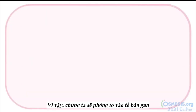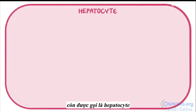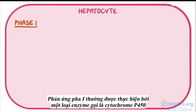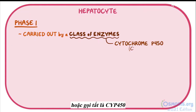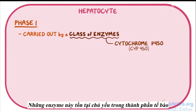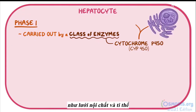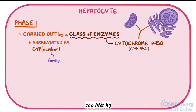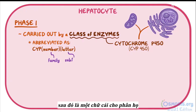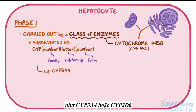Let's zoom into a liver cell, also known as a hepatocyte. Phase 1 reactions are typically carried out by a class of enzymes called cytochrome P450, or CYP450 for short. These enzymes hang out mainly in cell compartments like the endoplasmic reticulum and the mitochondria. They're often abbreviated as CYP followed by a number indicating the family, a letter for the subfamily, and then a number for the form — like CYP3A4 or CYP2D6.